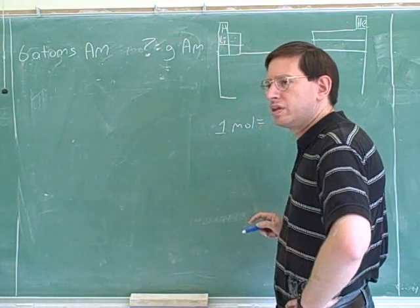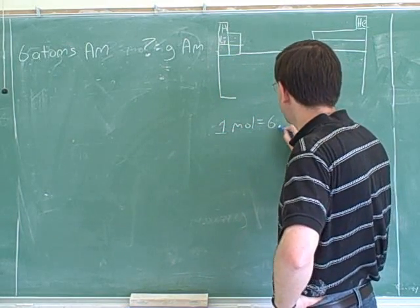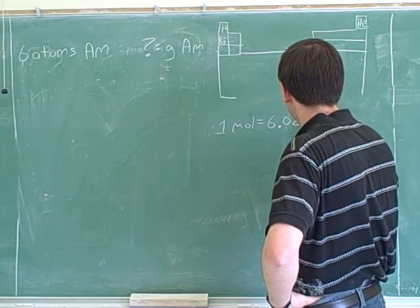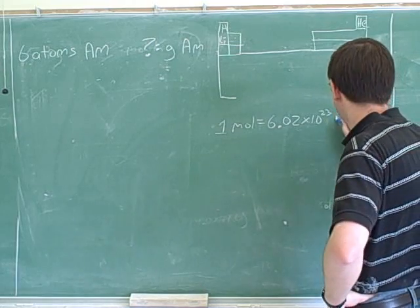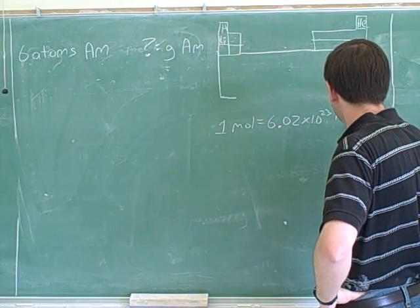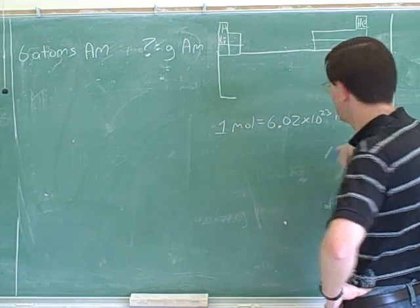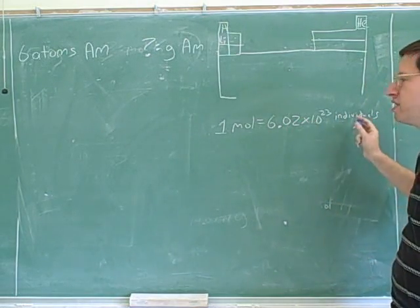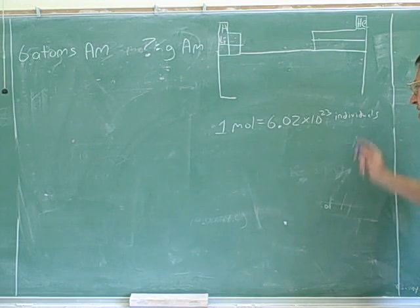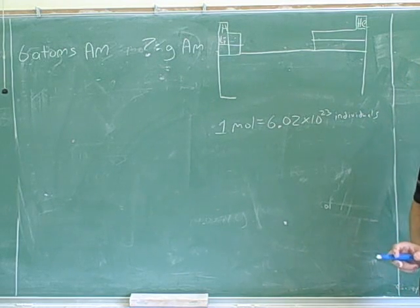We know that one mole is the same as 6.02 times 10 to the 23 individual particles. Right? One mole of the number means this number. Now, why did I say individuals here? Because the identity of individuals depends on what you're looking at.